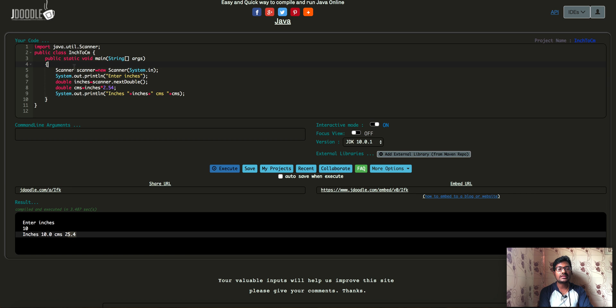Here initially what we are trying to do is we are trying to create the scanner object. So using scanner object we are trying to get the input from the terminal in double format scanner dot next double. So it would read the double value from the terminal and that would be stored in inches variable.